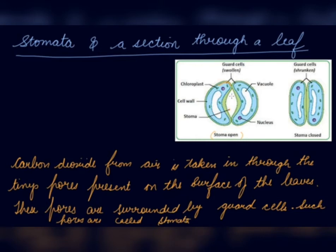This is a pore — this is the opening, and this is known as your stomata. It is surrounded by the guard cells. And there is a vacuole, then nucleus, cell wall, and chloroplast in this.